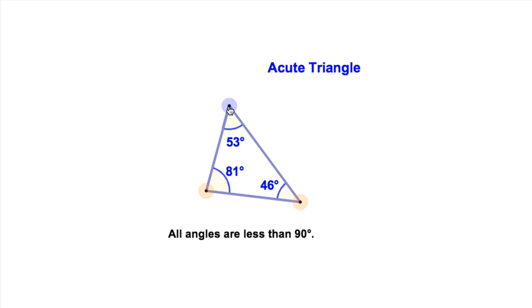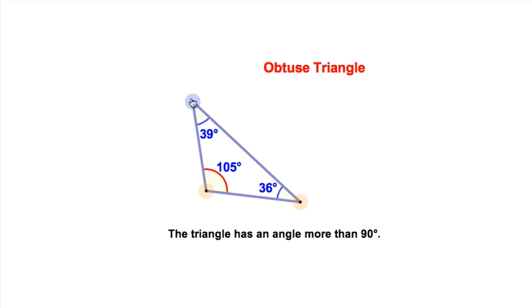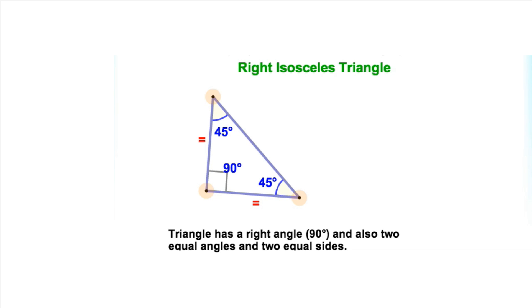All angles are less than 90 degrees, so this is an acute triangle. There is now a 90 degree angle, so this is a right triangle. And now there is an angle more than 90 degrees, so this is an obtuse triangle. And this is a right isosceles triangle.